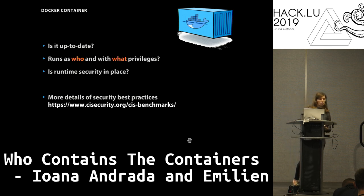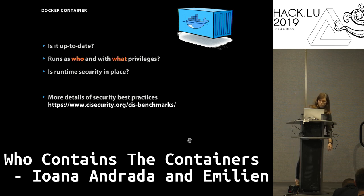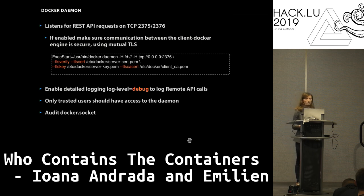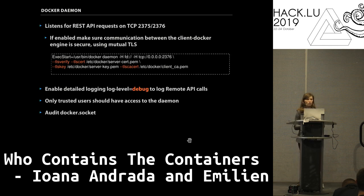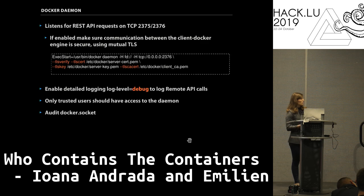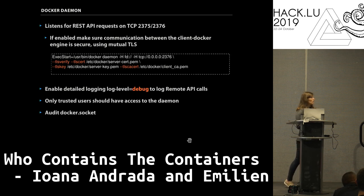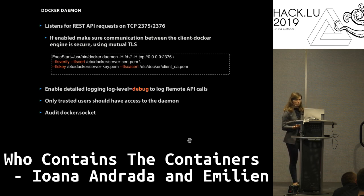You can find pretty good best practices on the CIS Benchmark — they have well-structured ideas on how to do it. The most important part of the Docker environment is the Docker daemon, or Docker engine. It deals with all the system calls and makes your container run in your environment. This daemon can work with the CLI but also can listen for REST APIs on ports 2375 and 2376.